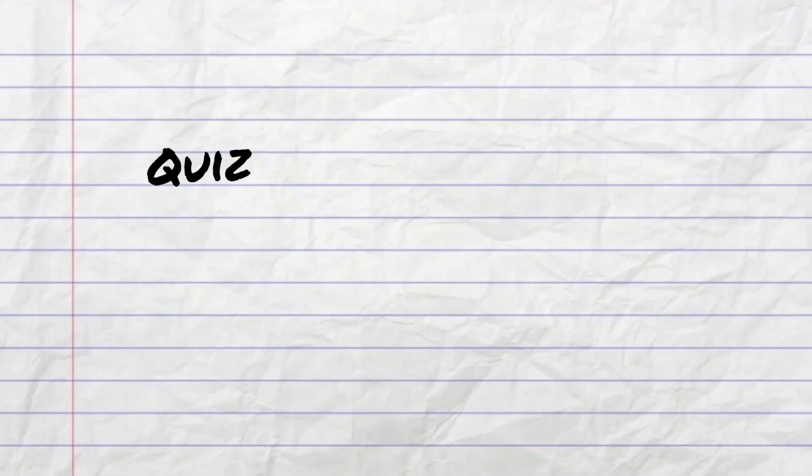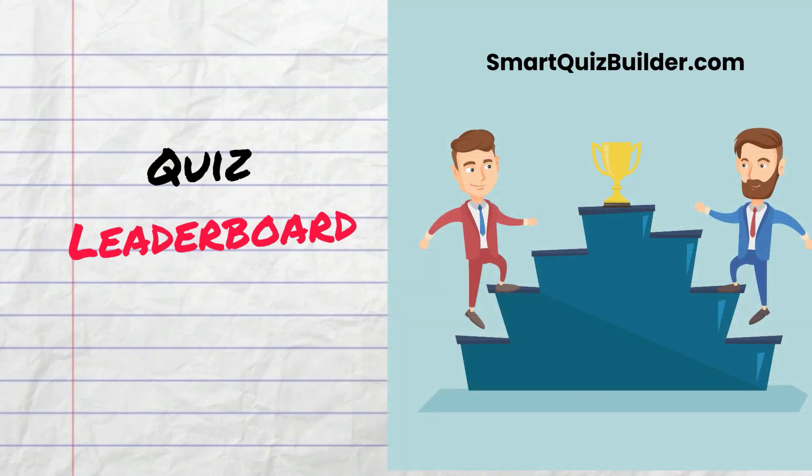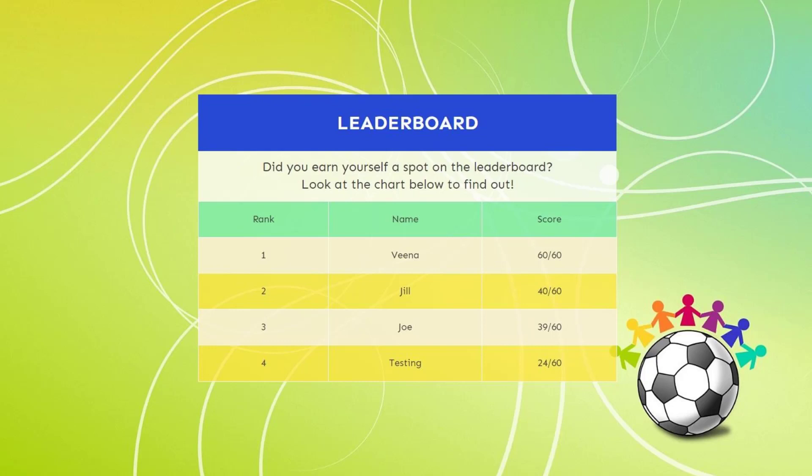Today I'm so excited to let you know that Smart Quiz Builder now supports a leaderboard feature that will allow you to create a leaderboard of scores. You can display a list of all the users and their scores depending on their rank, and it will allow you to gamify your quizzes. It will allow you to create scoring quizzes and assessment quizzes and increase the engagement, increase the participation — it's going to help you get people motivated to take the quiz, not just pass the quiz but actually engage with the quiz.